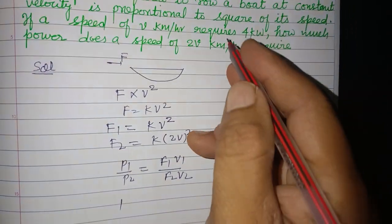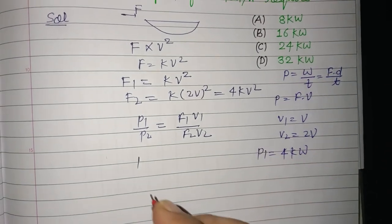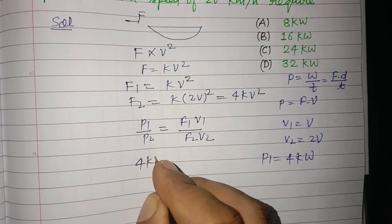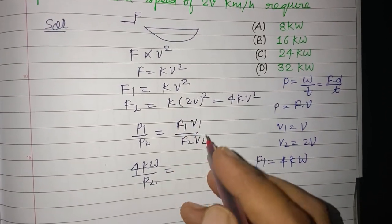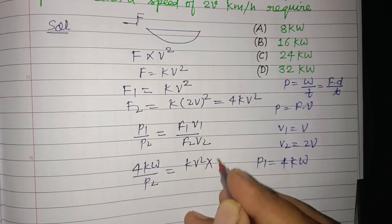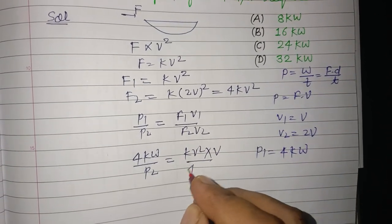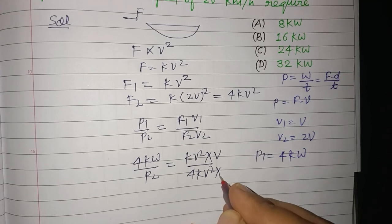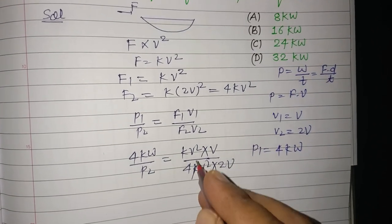So putting this, 4 kilowatts upon P2. F1 is kV² and V1 is V. F2 is k(2V)² and V2 is 2V. So this is kV² times V divided by k(2V)² times 2V.